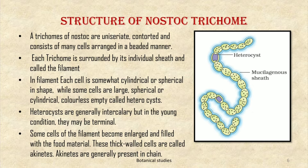The structure of the Nostoc trichome: a trichome of Nostoc is uniseriate, contorted, and consists of many cells arranged in a beaded manner. Each trichome is surrounded by its individual sheath and called the filament. In the filament, each cell is somewhat cylindrical or spherical in shape, while some cells are large, spherical or cylindrical, colorless, and empty — called heterocysts. Heterocysts are generally intercalary but in young condition they may be terminal. Some cells of the filament become enlarged and filled with food material; these thick-walled cells are called akinetes.